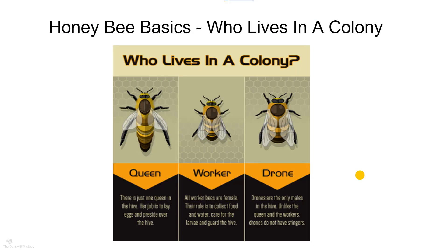There are three types of bees in the colony. The queen bee has a long abdomen — you can spot her moving through the hive as other bees make a path for her. There is only one queen; her job is to lay eggs and preside over the hive. Even her pheromones and personality determine the personality of the hive. She lives for several years. Worker bees are the female bees — they collect food and water, care for larvae, and serve as security guards.